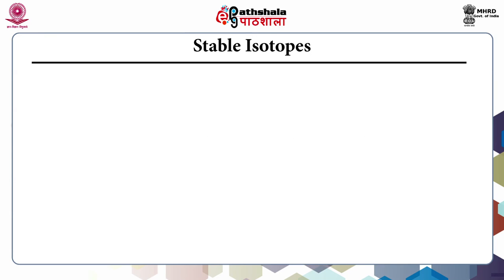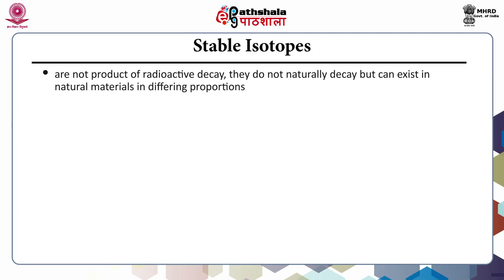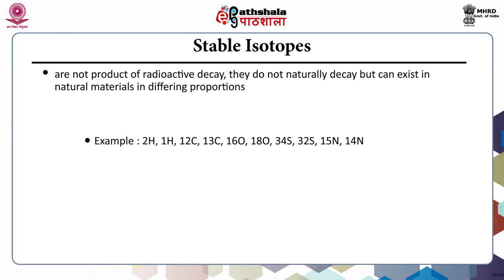Stable isotopes are not products of radioactive decay. They do not naturally decay but can exist in natural materials in different proportions. Examples are deuterium, hydrogen, C-12, C-13, oxygen, sulfur-32, sulfur-34, nitrogen-15, and nitrogen-14.